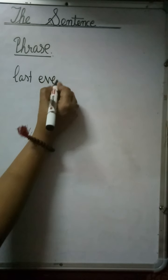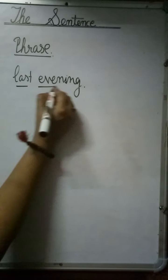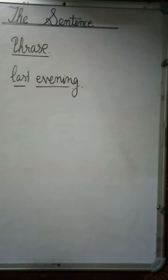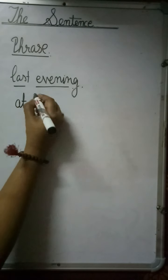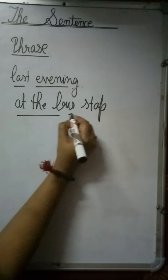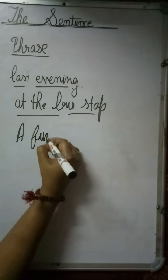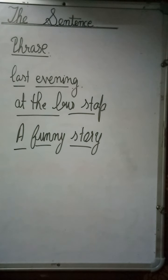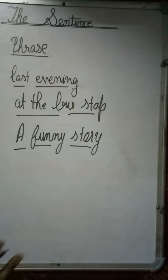For example: 'last evening' — there is no subject, so it is only a group of words that are making some sense, therefore it is called a phrase. Another example: 'at the bus stop' — who is at the bus stop? That is missing. 'A funny story.' 'Of no use.' These are groups of words, but they are not making complete sense, therefore they are known as phrases.